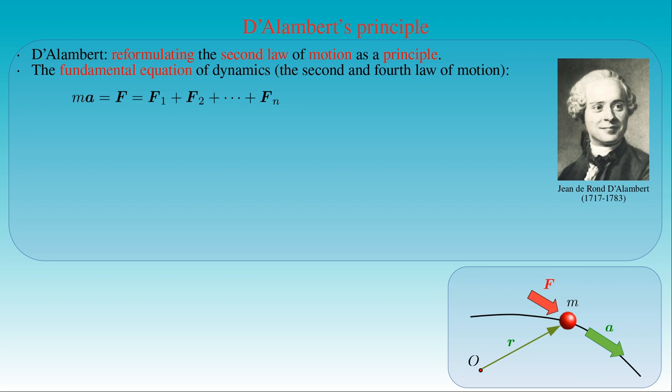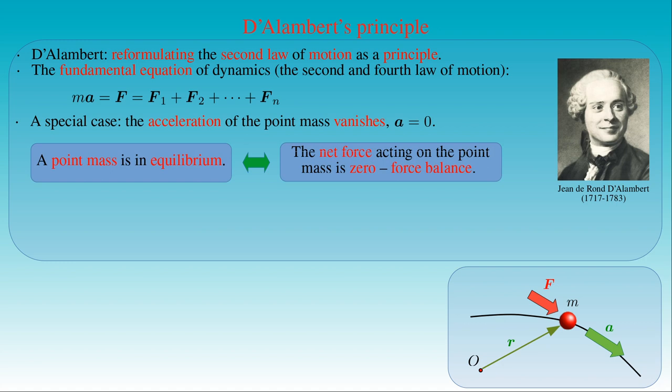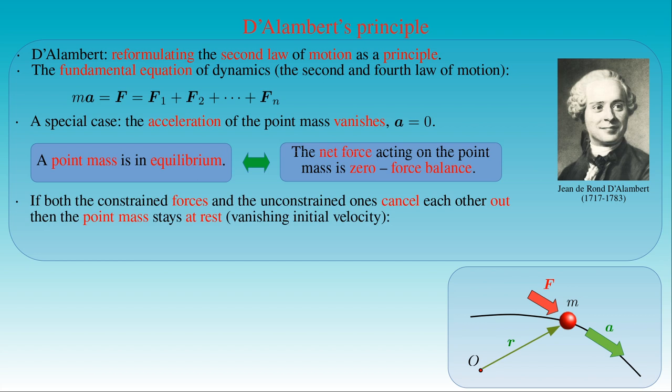The acceleration of a body is always measured with respect to a frame of reference, represented by reference point O, where the position vector r pointing from point O to the point-like body describes the instantaneous position of the body. We also considered situations where the acceleration vanishes: the point mass is at rest or in equilibrium if and only if the net force is zero, that is, the forces are balanced. If both constrained and unconstrained forces cancel each other out, the point mass remains at rest, provided its initial velocity with respect to the frame of reference is zero.